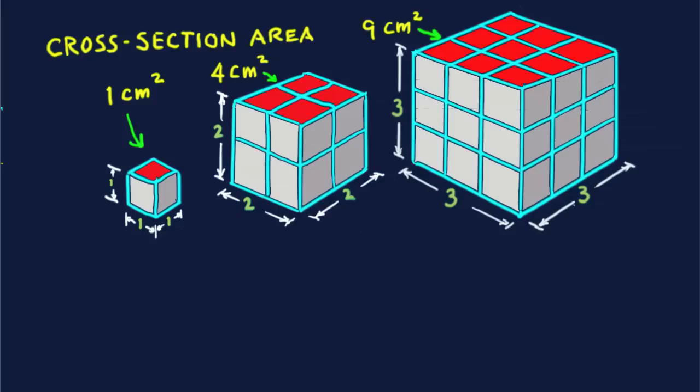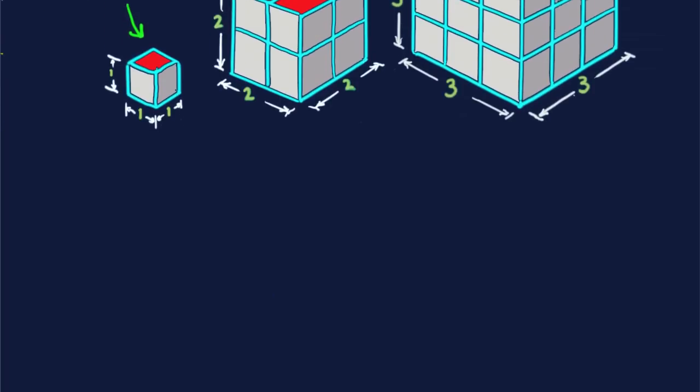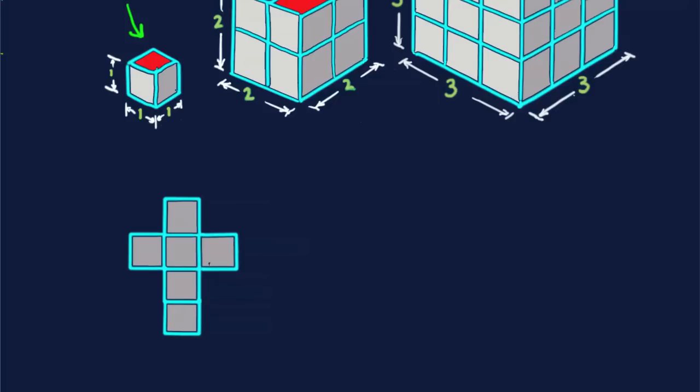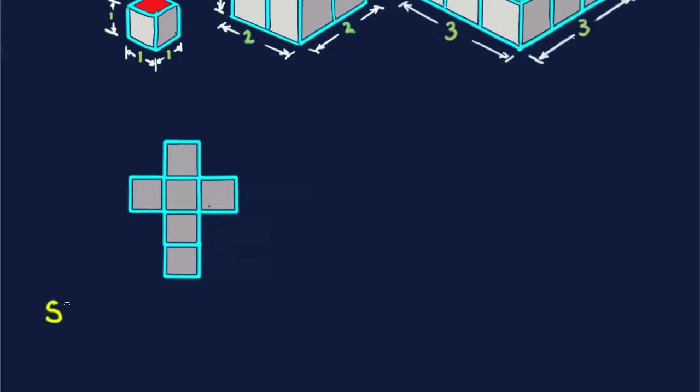This increase in area by squaring the factor of increase applies also to the overall outer surface of things. This is better seen if we imagine the cubes are hollow boxes and we open them. Here we have the bottom of the smallest cube. The back side is open, then the two sides, then the front side which is connected to the top. It's easy to see that the surface area is six square centimeters. Simply count them.